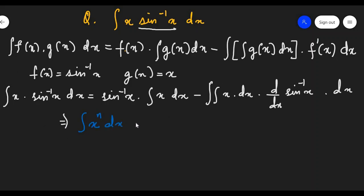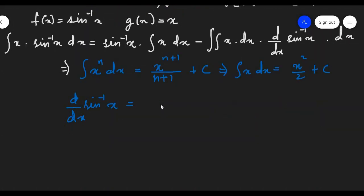Now we are going to use some identities. We know that integration of x^n is equal to x^(n+1) / (n+1) + c. From here, integration of x gives us x squared by 2 plus c. We also need to differentiate sine inverse x. The differentiation of sine inverse of x is equal to 1 upon square root of 1 minus x squared.